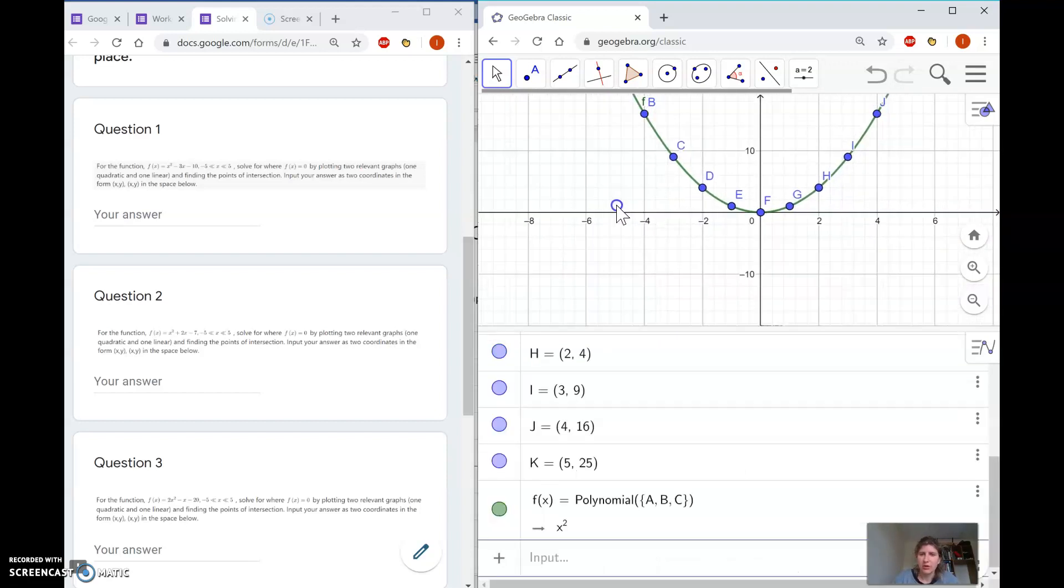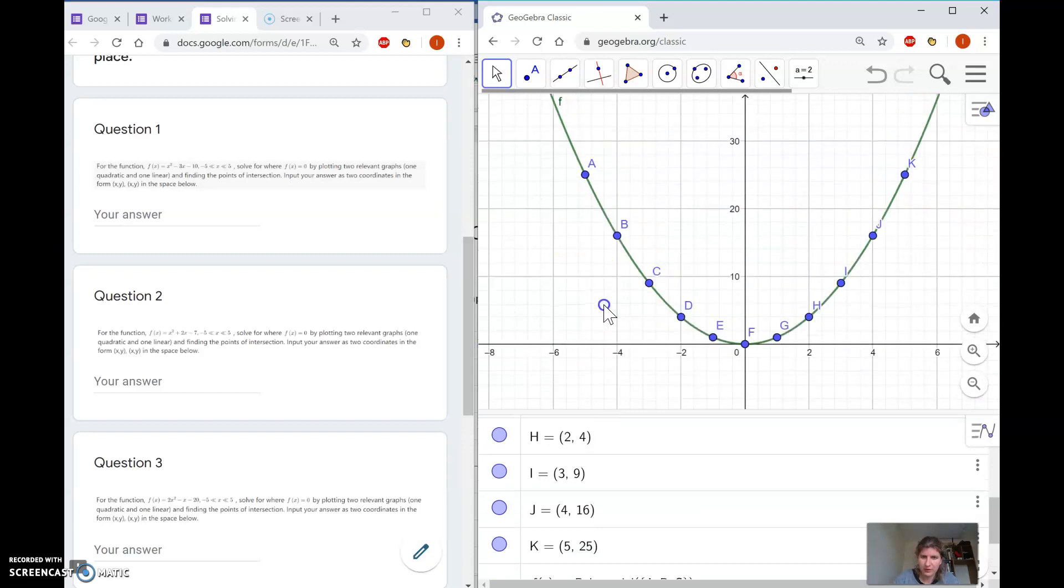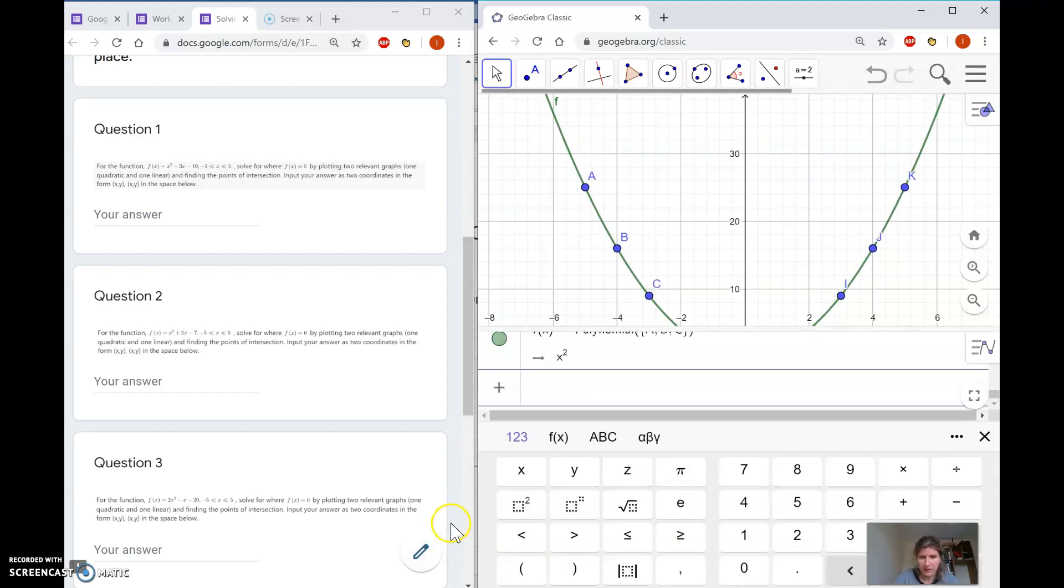For the linear part, we're going to input more points. I'm going to use lowercase letters for these points. For the first value, our x coordinate is negative 5, and our linear part is 3x + 10, which is the opposite of what's in the original equation. So 3 times negative 5 is negative 15, plus 10 is negative 5. My first coordinate is (-5, -5).